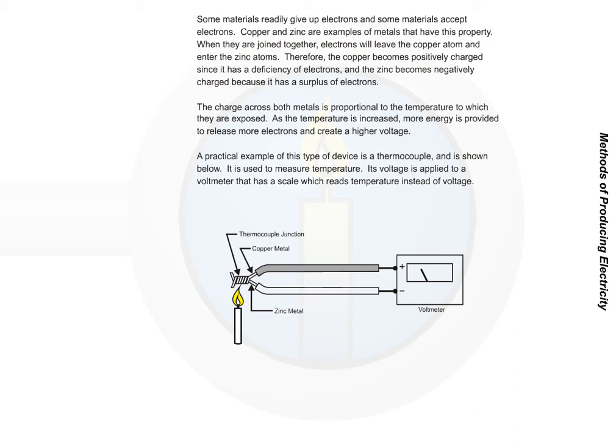The charge across both metals is proportional to the temperature to which they are exposed. As the temperature is increased, more energy is provided to release more electrons and create a higher voltage. A practical example of this type of device is the thermocouple. It is used to measure temperature. Its voltage is applied to a voltmeter that has a scale which reads temperature instead of voltage.